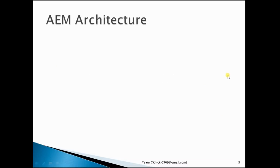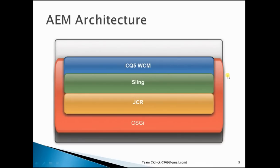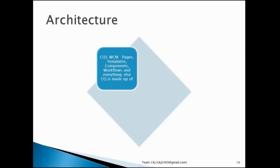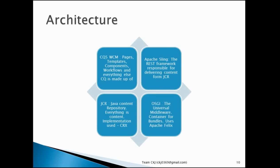The next slide covers AEM architecture. As per the diagram, the main core at the server side is the OSGi bundles — these are the Java files or servlet files operating at the server end. The next level is the JCR, where most files are stored. Above that comes Sling, and finally the front-end layer is CQ5 WCM. You can review these slides to understand in brief what CQ5 WCM, Sling, JCR, and OSGi are.